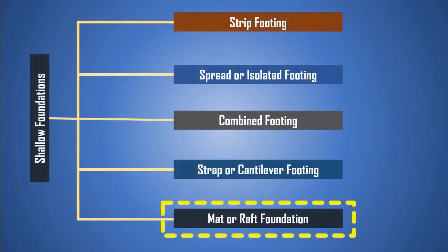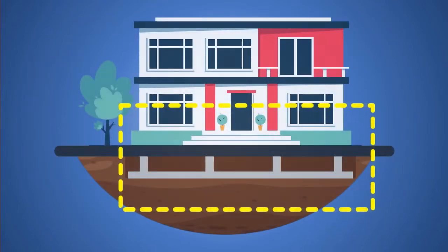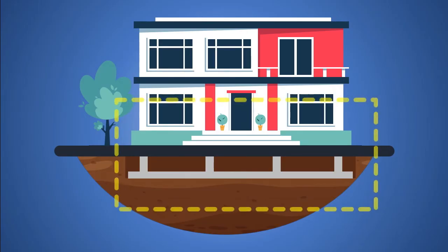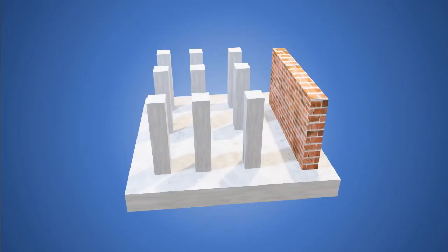Mat or raft foundation. A mat or raft foundation is a large slab supporting a number of columns and walls under the entire structure or a large part of the structure.